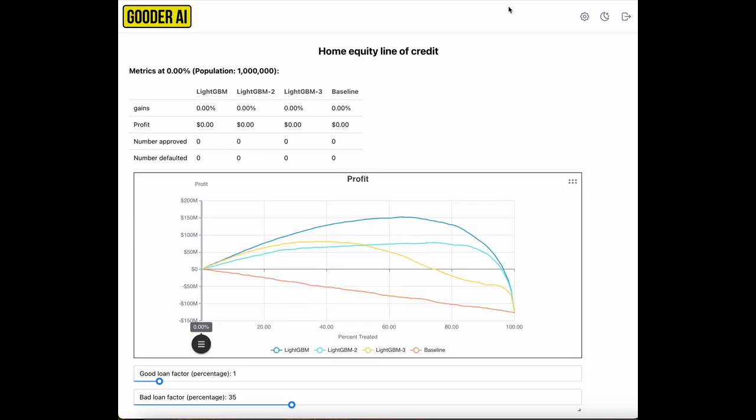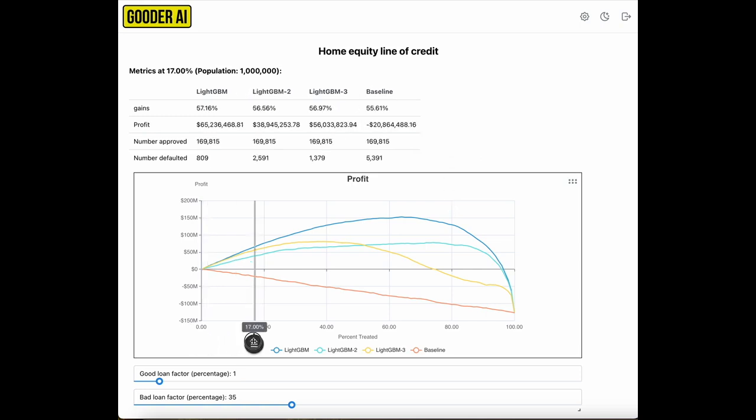And then I'll just show you a glance here of credit scoring, deciding how many applicants for home or a line of credit. This, like most of my demos, is based on real data, based on a real model. This is showing the performance, comparing three models and then a baseline of basically random guessing.